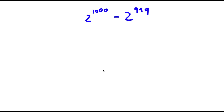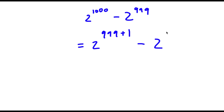So I have 2 to the power of 1,000 minus 2 to the power of 999. So now to solve this problem, I'm going to first rewrite this as 2 to the power of 999 plus 1 minus 2 to the power of 999. So 1,000 is just rewritten as 999 plus 1.